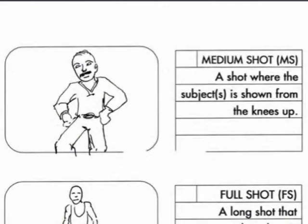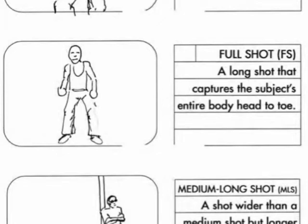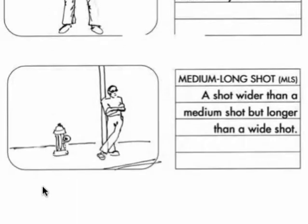A medium shot — or American shot, because it is the most popular shot in American movies — shows the subject from the knees up. It asks us to look at the character and ignore the background; the character is still the most important part of this shot. A full shot is where we begin to transition: we begin to see both the character and their surroundings. It is usually a long shot that captures the subject's entire body from head to toe. The medium-long shot is wider than the medium shot but not longer than a wide shot; parts of the environment take on significance and we see the way the character interacts with the environment.